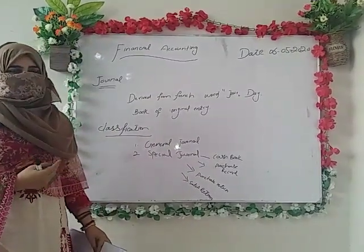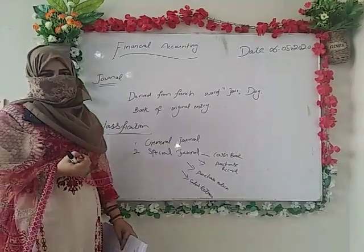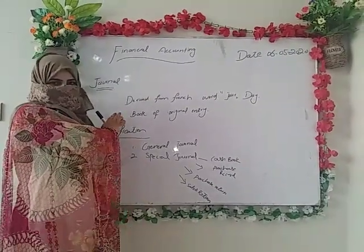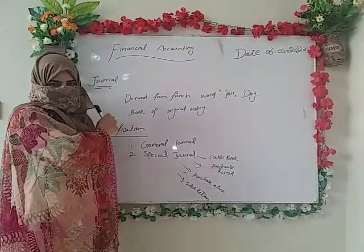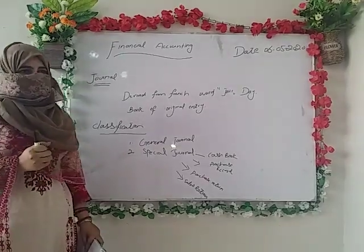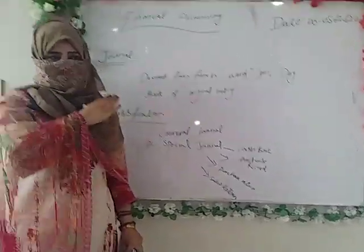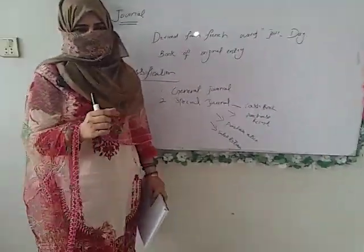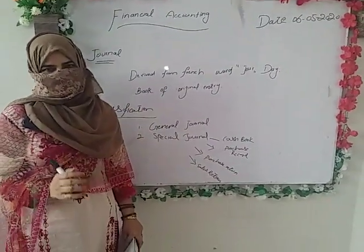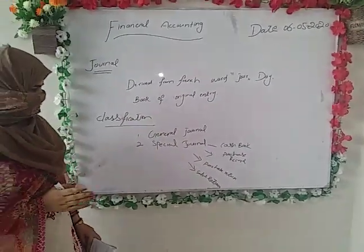Jab accounting me koi bhi event occur hota hai, koi bhi transaction hoti hai, toh isse sabse pehle journal me record kiya jata hai. Iske ilawa, isme transaction ko ek order me, sequence me record karte hain — kya increase ho raha hai, kya decrease ho raha hai.